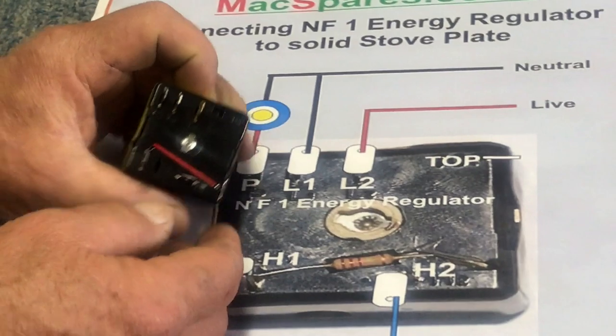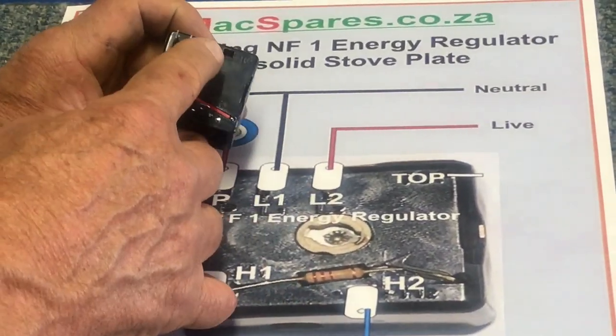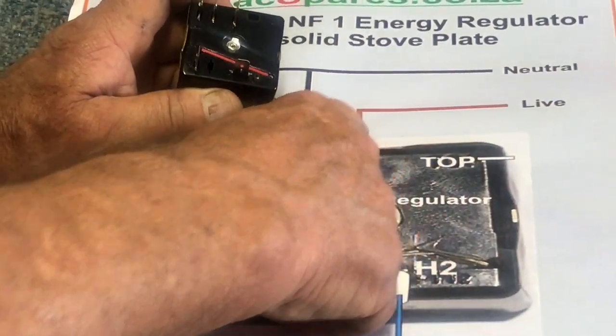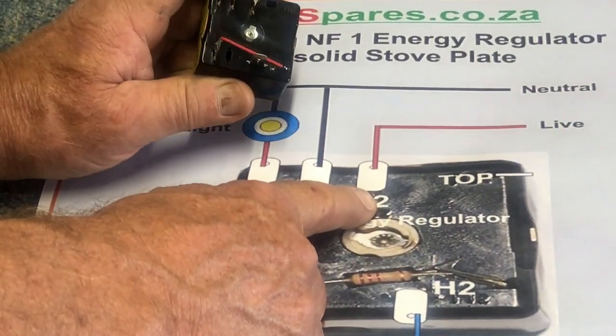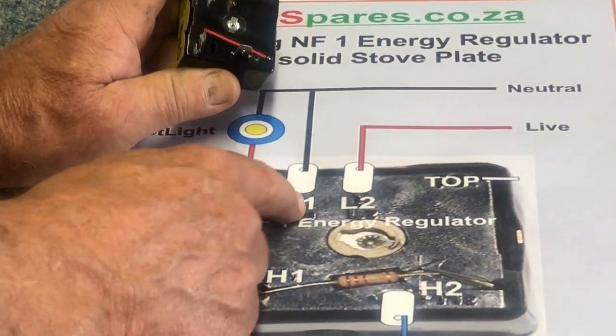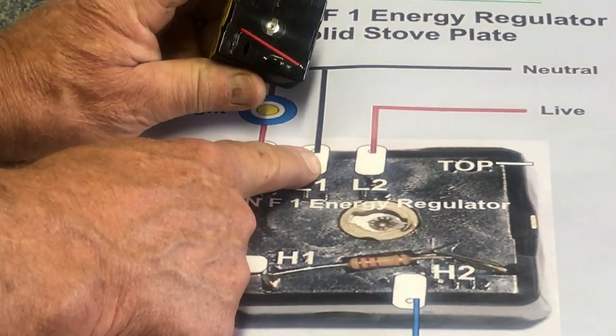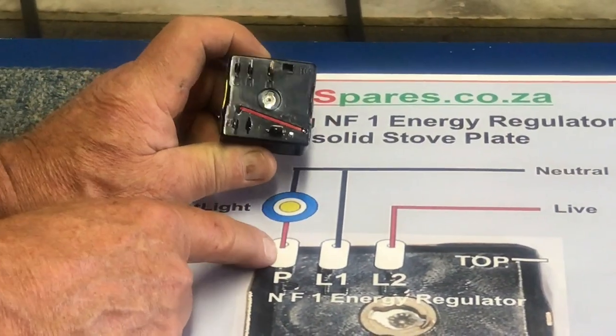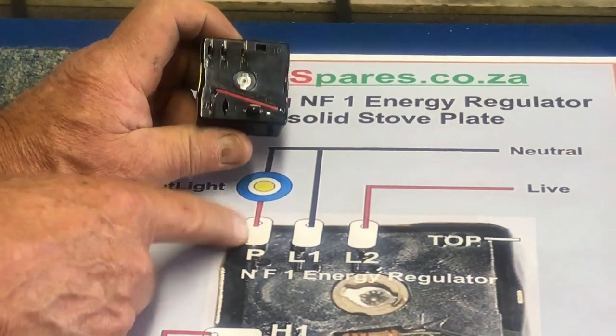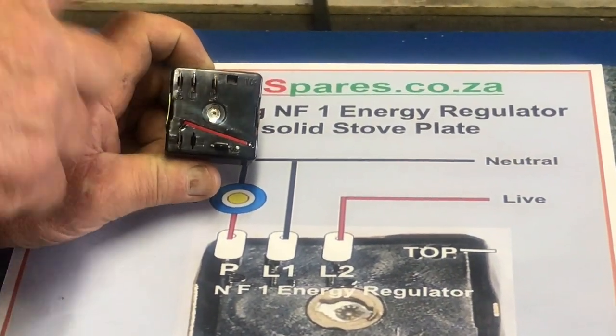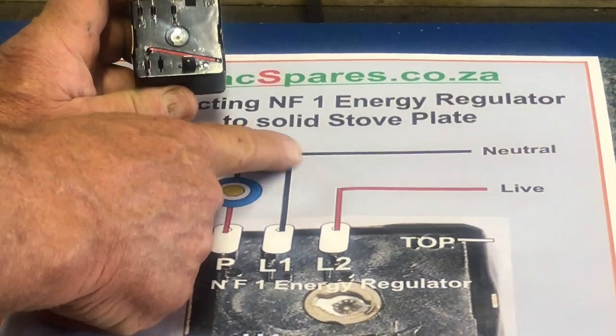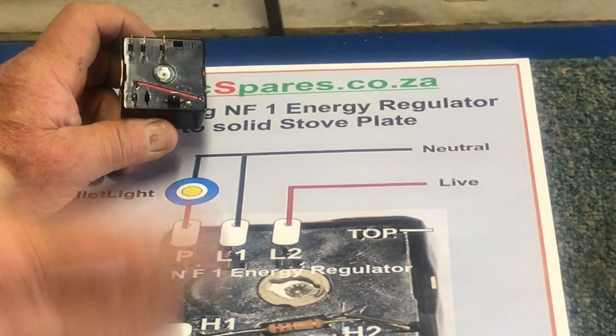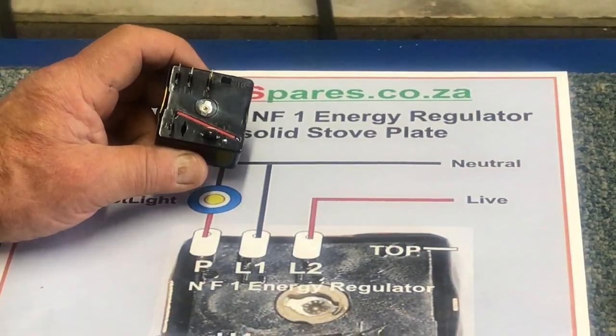Now to connect it up. If we go and look at L2, which happens to be this one, L2 and L2, same point. You take your live from your fuses and you push it onto L2. L1 is your neutral from your neutral box. So that's L1 there, that's L2. Live, neutral. The P stands for your pilot light. You connect it there, and the other side of your pilot light, you connect to your neutral. That means that your pilot light will come on, go off, whenever your stove switch is putting power onto your plate.